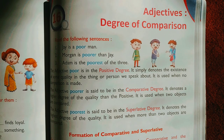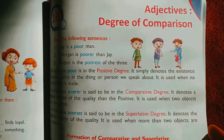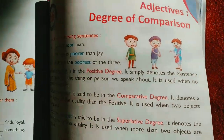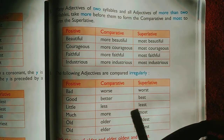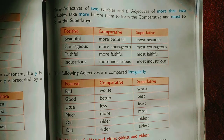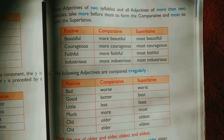Welcome back dear students, I hope all of you are fine. Here we are going through the topic 'Adjectives: Degree of Comparison' from English grammar. In our previous video we discussed a part of the lesson and some basic rules about how the positive degree is transformed into comparative and superlative degrees. So in the previous video we have seen a lot of rules about how the positive degree becomes comparative and superlative.